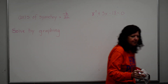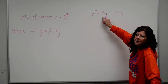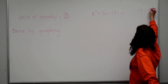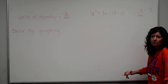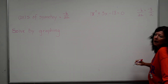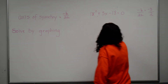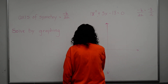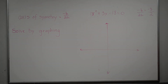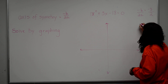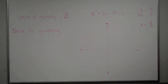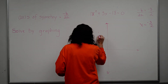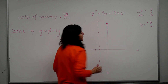Let's find the axis of symmetry. Negative b — here's my b term, so negative b equals negative 3 — over 2a. What is my a? It's the coefficient of x squared, which is an understood 1, so on the bottom I have 2 times 1, which is 2. Since everything opens up or down, the axis of symmetry is a vertical line: x equals negative 3 over 2, which is the same as negative 1 and a half. I'll put a dotted line there to represent the axis of symmetry.